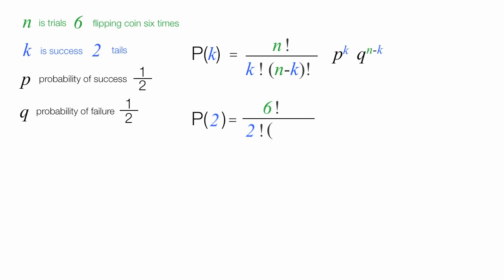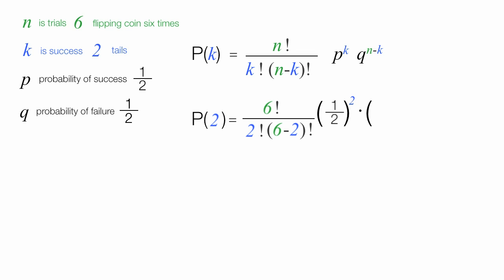Trials minus successes, or six minus two — six minus two successes — all factorial. Times P, or one-half, raised to the K power, or the second power. That's one-half squared. Q, which is also one-half, raised to the N minus K power, so it's six minus two.